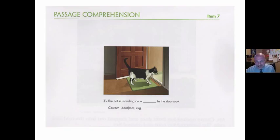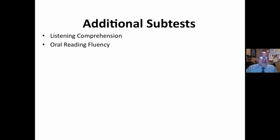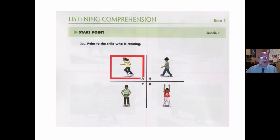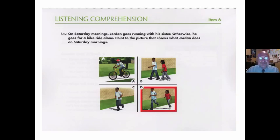'The cat is standing on a blank in the doorway.' Two additional subtests: listening comprehension and oral reading fluency. 'Point to the child who is running.' This is kind of a meaning-making sort of thing. Listening comprehension — you listen, you see which one makes sense. Is this listening? Is this meaning making? Is this remembering?